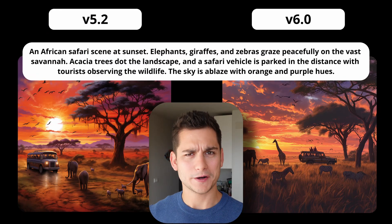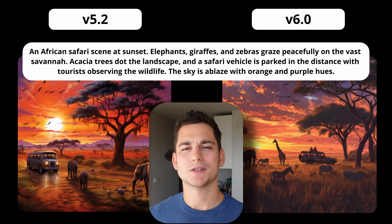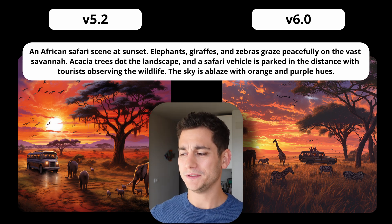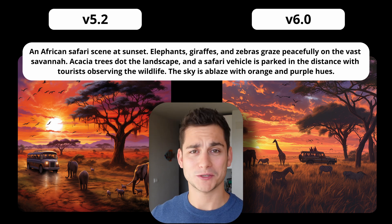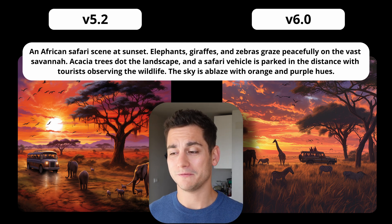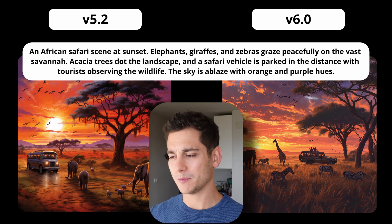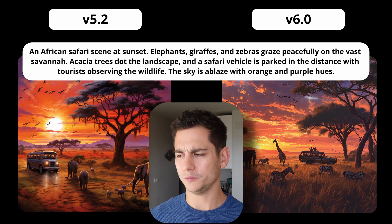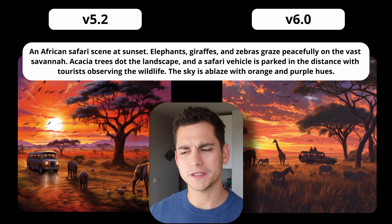The next scene is a safari with elephants, giraffes, and zebras and a safari vehicle in the background with tourists gazing out into the distance. In the old version, we only see elephants and some strange unidentifiable animals. However, in version 6.0, we have all the animals requested — giraffes, elephants, zebras — and we actually do have tourists gazing out into the distance from the car, whereas in the old version there are no people in the bus. A lot more detail in the images.